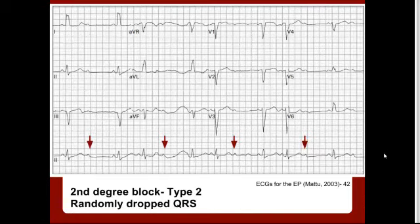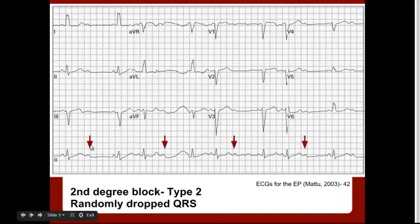In this example of a second degree block Type 2 — case 42 in the book — this is where you're going to have randomly dropped QRS waves. Pointed out with arrows: here's a P with no QRS, here's a P with a QRS, then P, QRS, then P with no QRS. There are just these randomly dropped ones, highlighted with the red arrows. That would be a second degree block Type 2.